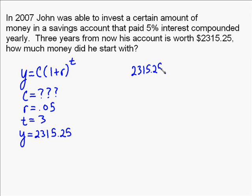So now it's just a matter of substitution. You plug in those values into the equation, into the growth equation. So 2,315.25 goes in for y, 0.05 for r, and 3 for t.